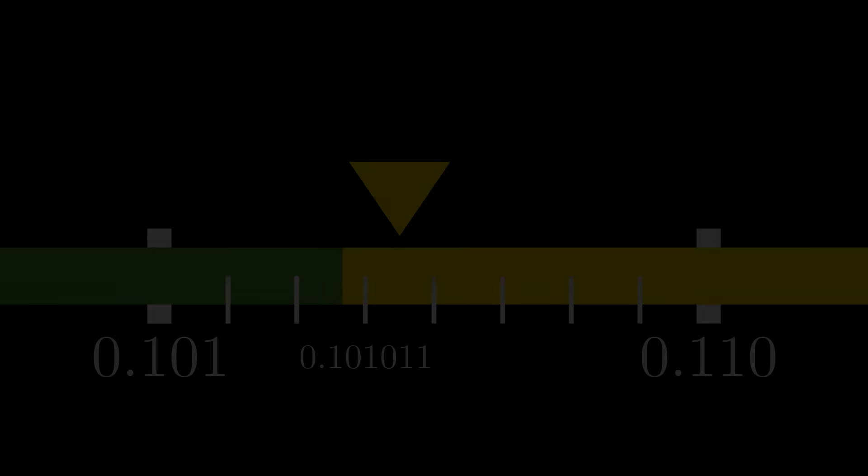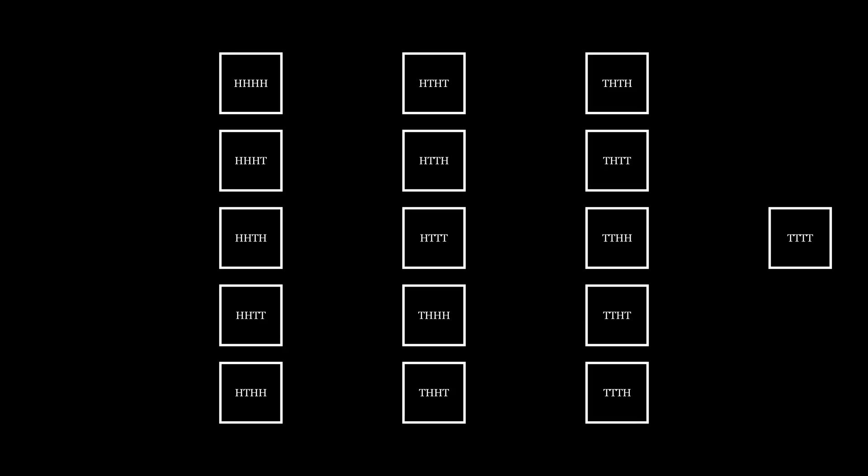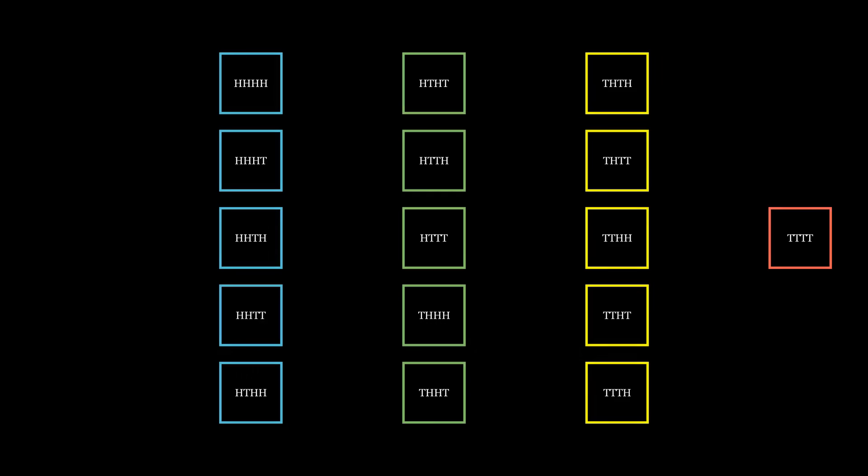But it's important to note any strategy that gives a perfectly fair chance between three colors must allow the process to potentially go on forever in the worst case. The reason is simple. After K coin flips you have 2 to the power of K possible outcomes which is never divisible by 3.